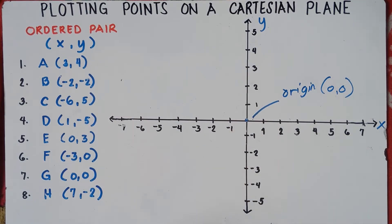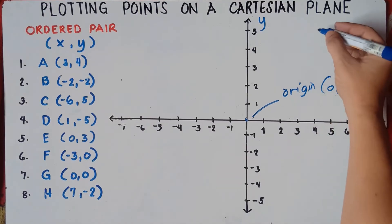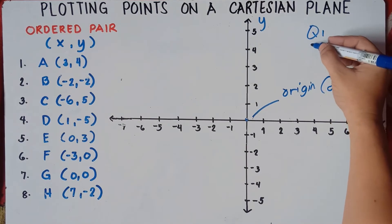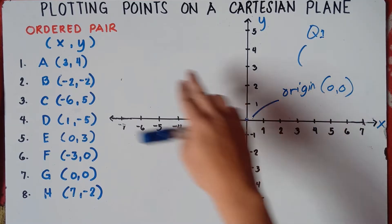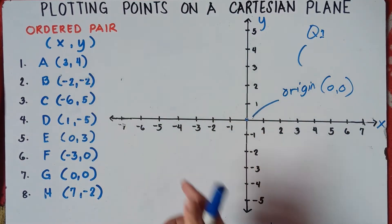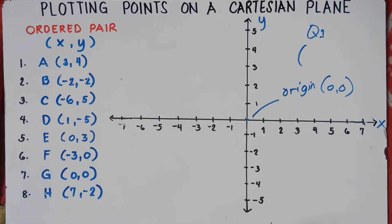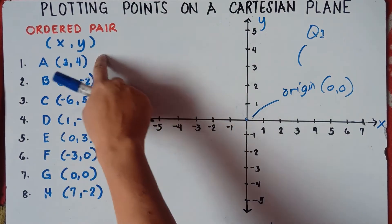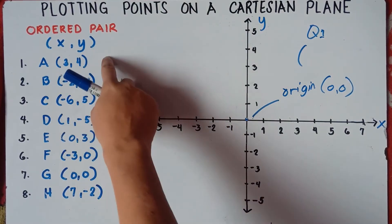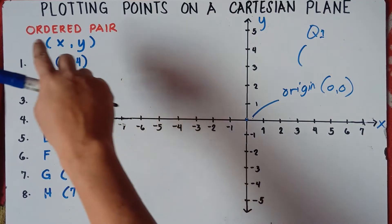In the Cartesian plane, we also have what we call the quadrants — we have four quadrants. Always remember the ordered pair when you plot points. Ordered pair means x and y; x comes first before y, so it's always (x, y).